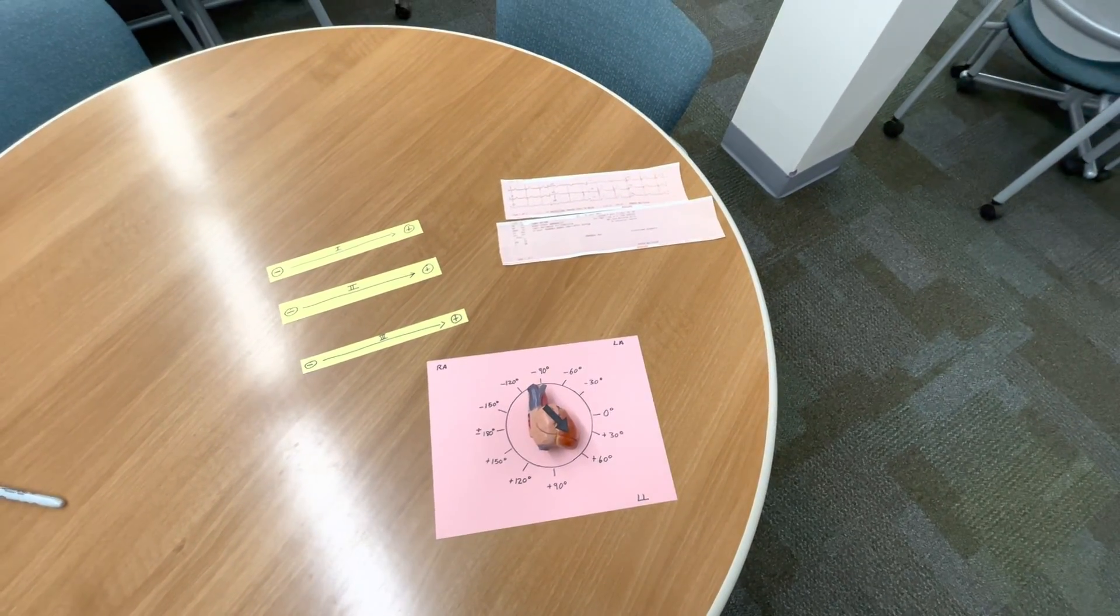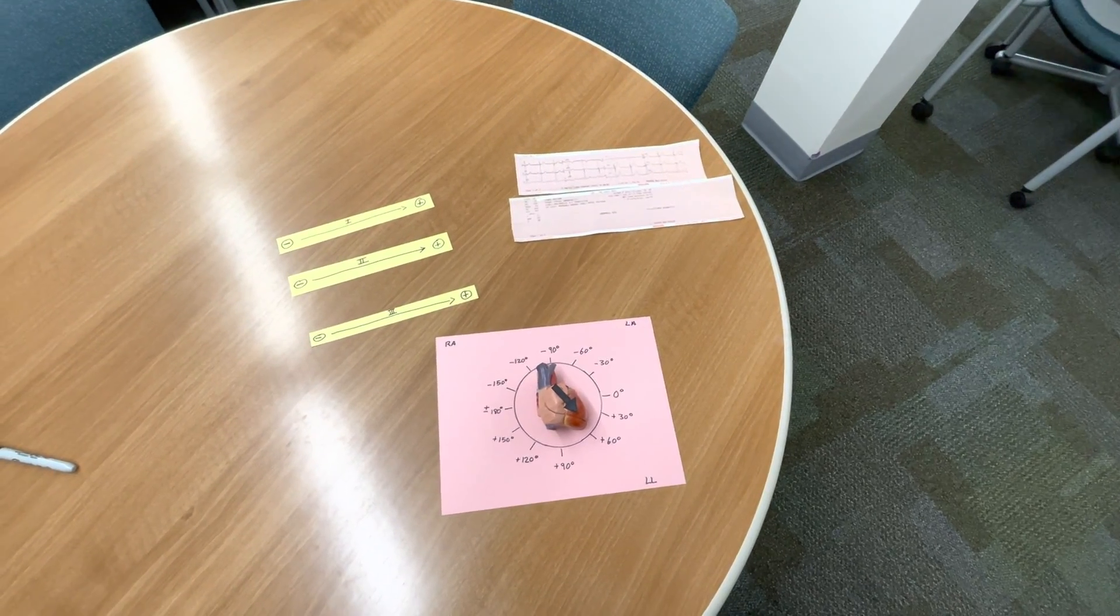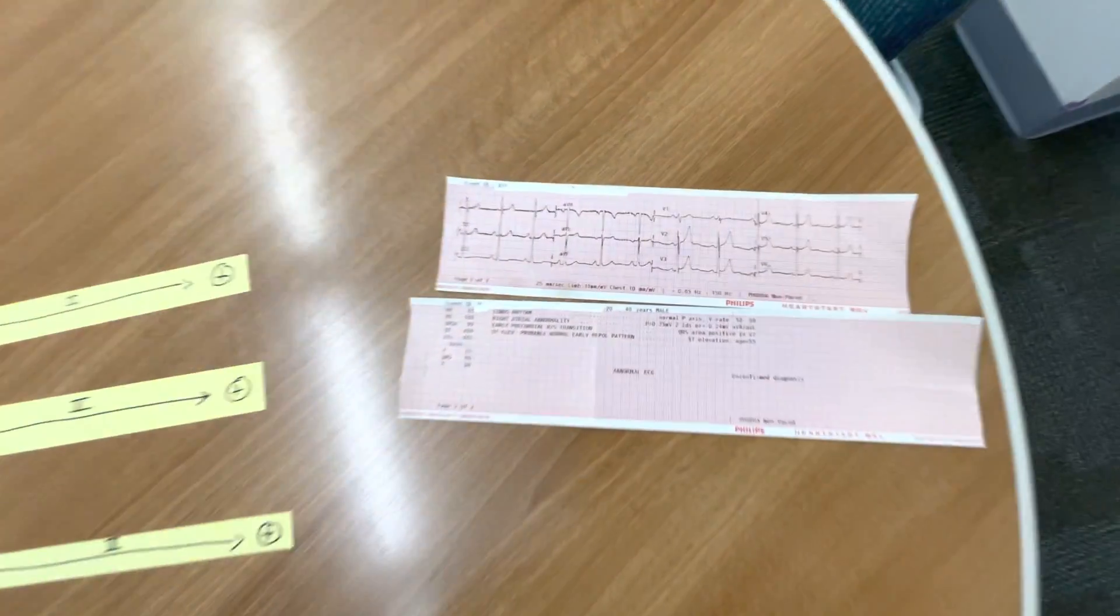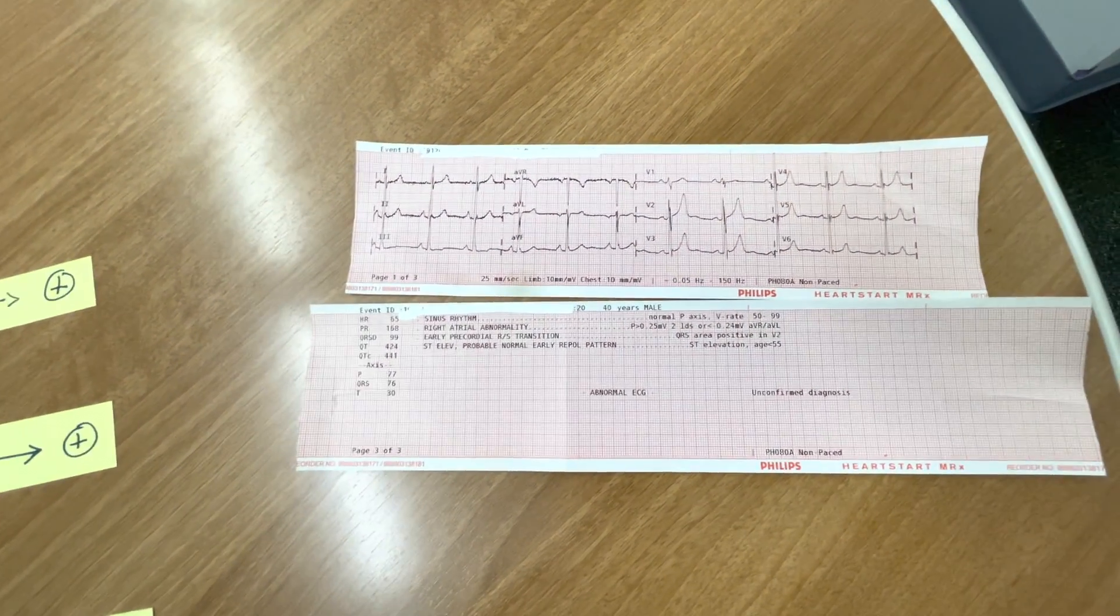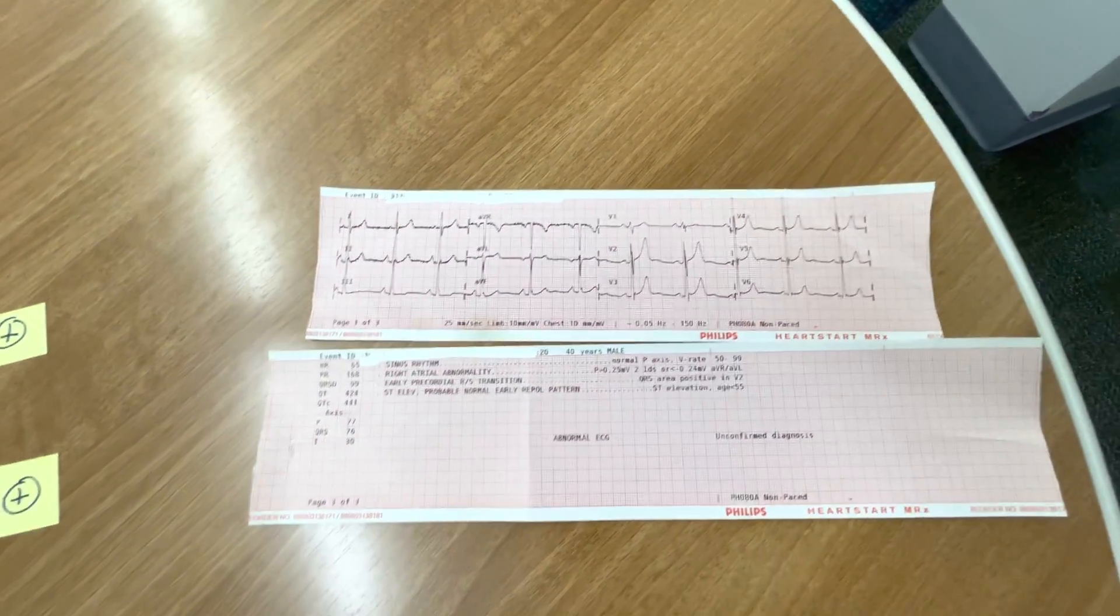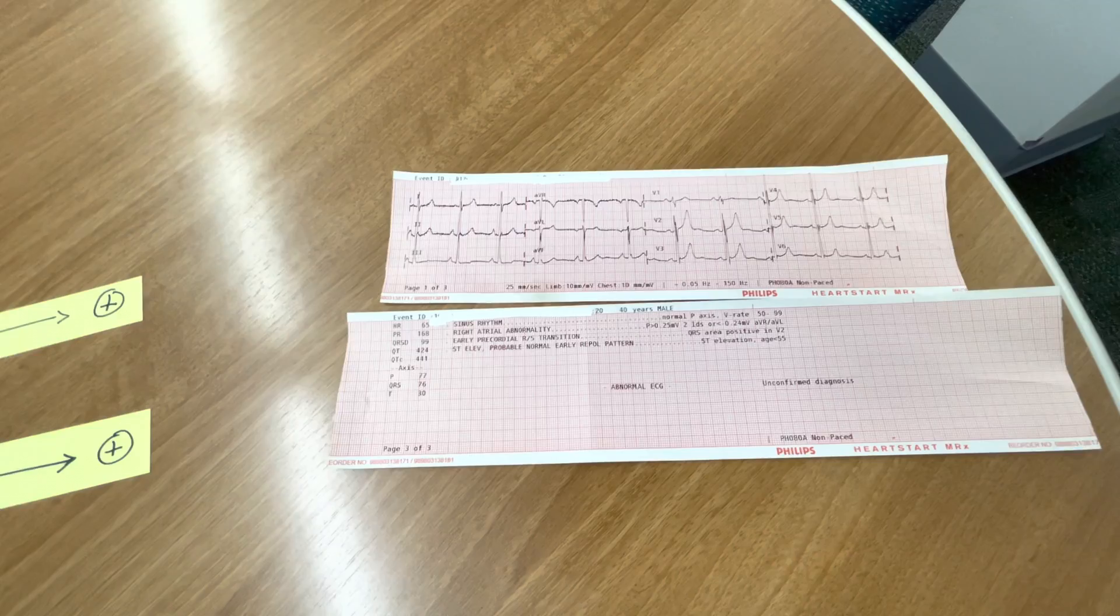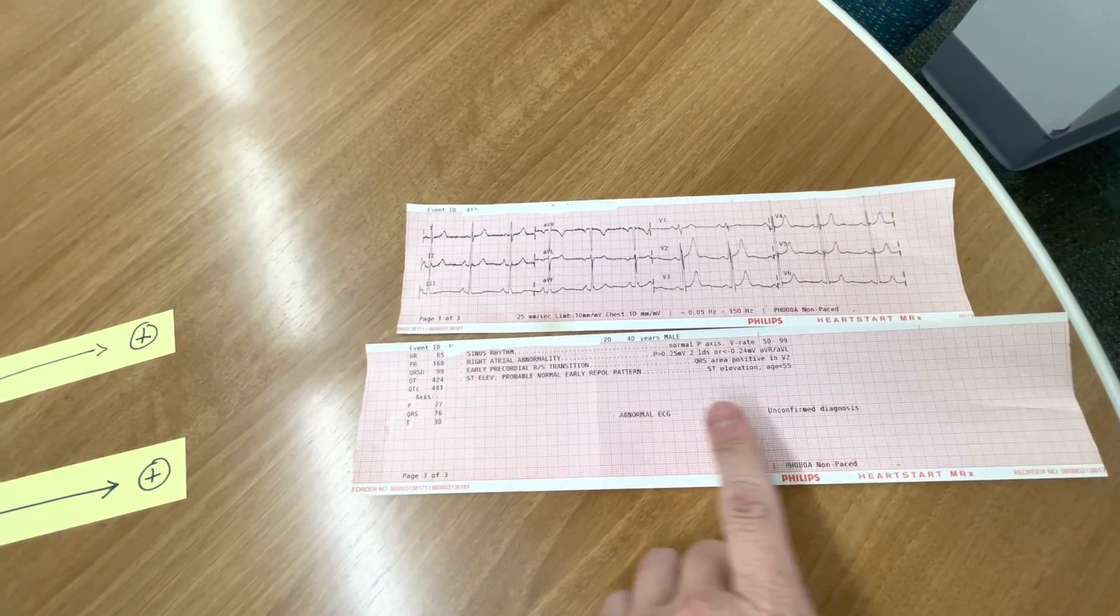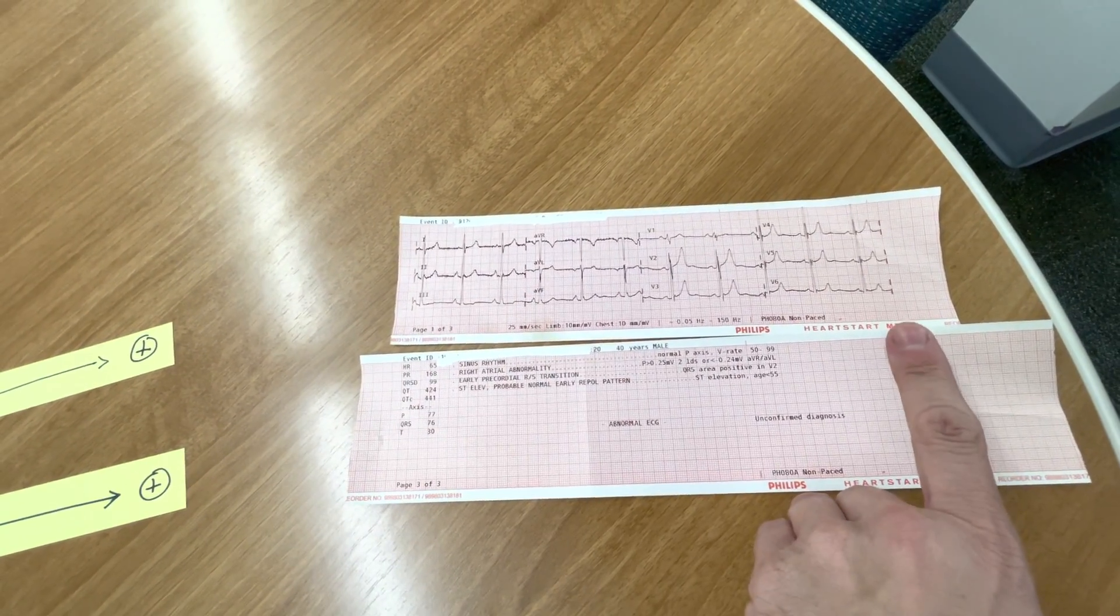Good day, everybody. This is Chris of the Ancient Scholar, and I'd like to do a quick video on axis deviation, how we determine it, why it's important. So, you get a 12-lead ECG on somebody. This happens to be a 12-lead ECG of me from a few years ago, back when I was in my 30s.